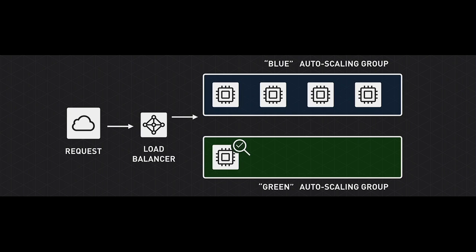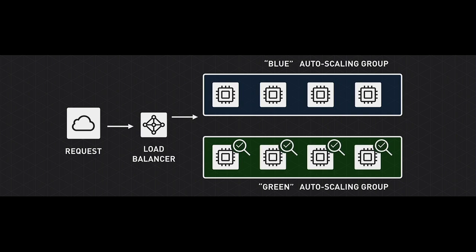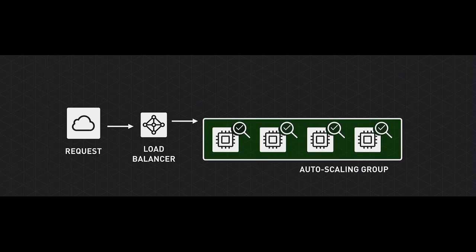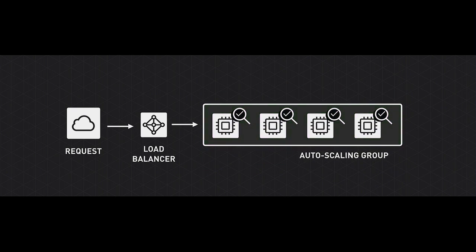After a single instance is spun up and checks out, it will populate the auto-scaling group with the same number of instances as the previous auto-scaling group. When all the tests check out, and only when the service is absolutely happy, it will swap the two over — starting to route traffic into the green new version of the platform, and the old version will disappear.